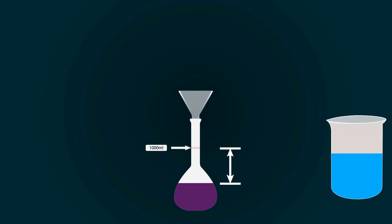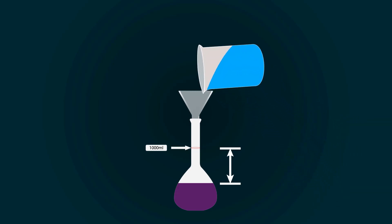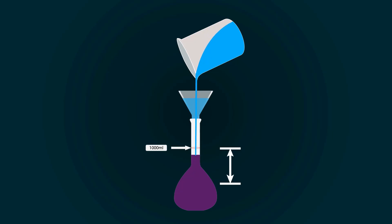Take more distilled water into an empty beaker and start pouring it into the volumetric flask.